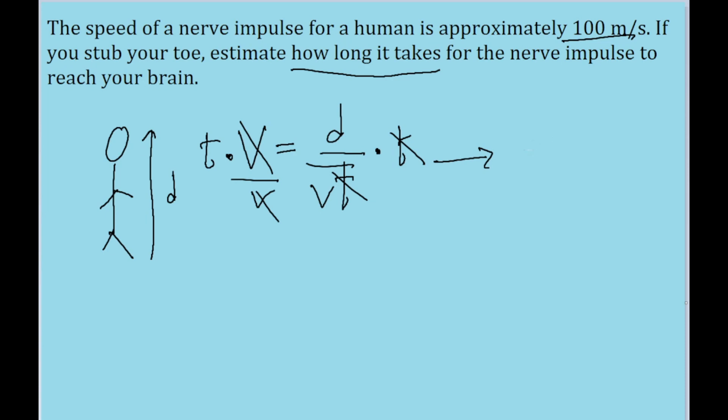And what we end up with is a formula telling us that the amount of time is equal to the distance traveled by the pulse divided by the speed at which the pulse travels.